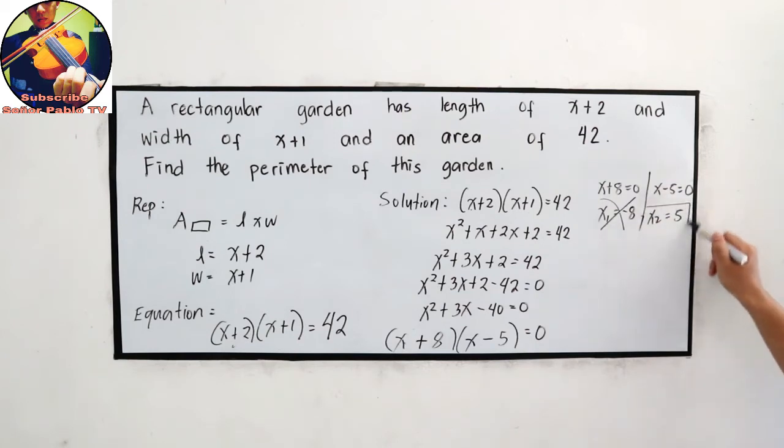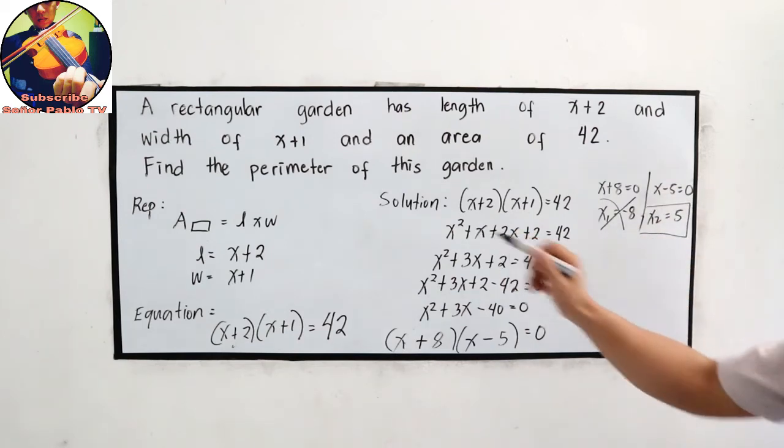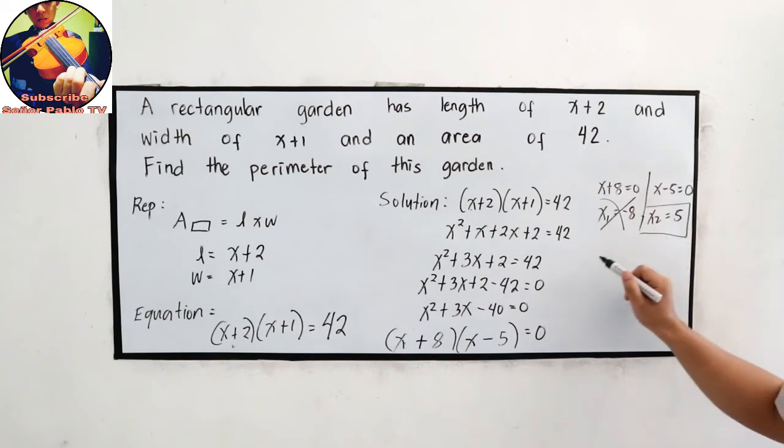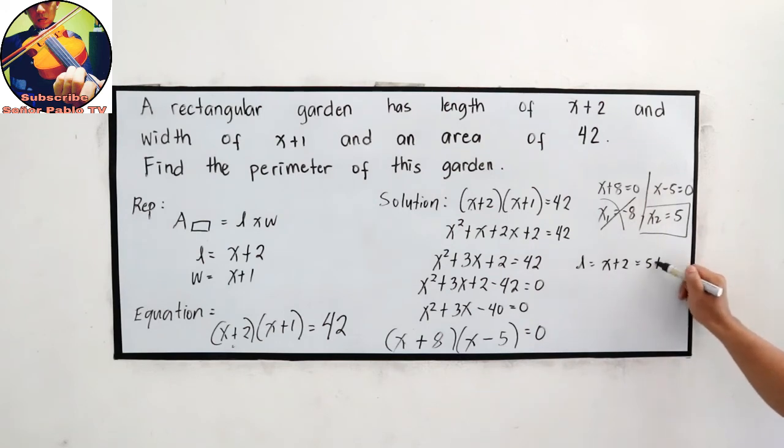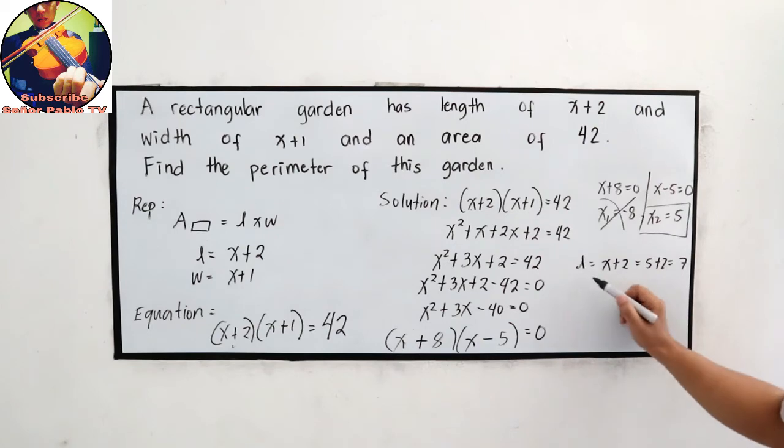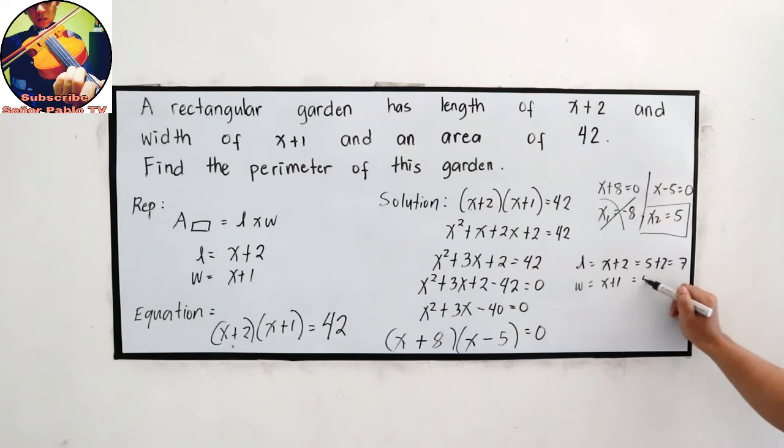So our length is x plus 2, so that is equal to 5 plus 2, which is 7. And the other one, width, is x plus 1, which is 5 plus 1, which is 6.